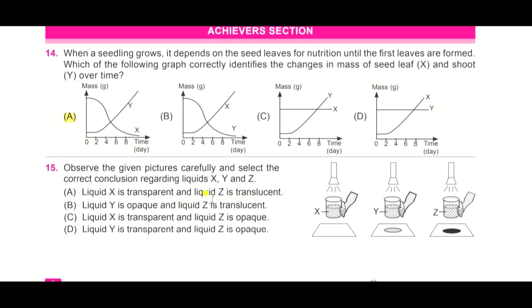C, liquid X is transparent and liquid Z is opaque. And D, liquid Y is transparent and liquid Z is opaque. Observe the picture, you can see the shadow formed over there. It will help you to find the correct statement. And the correct answer is C: liquid X is transparent and liquid Z is opaque, because for X there is no shadow formed and for Z there is a dark shadow.